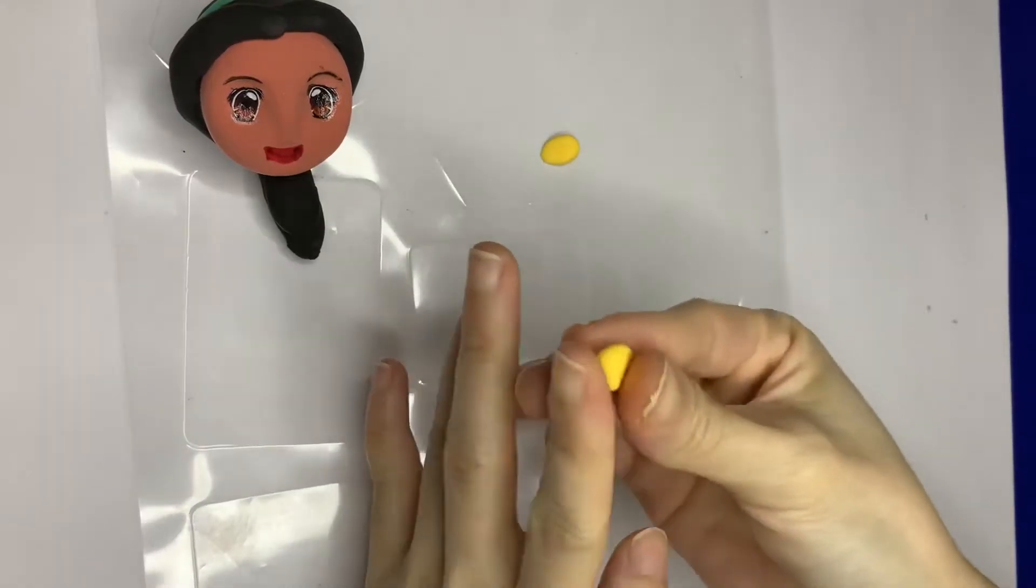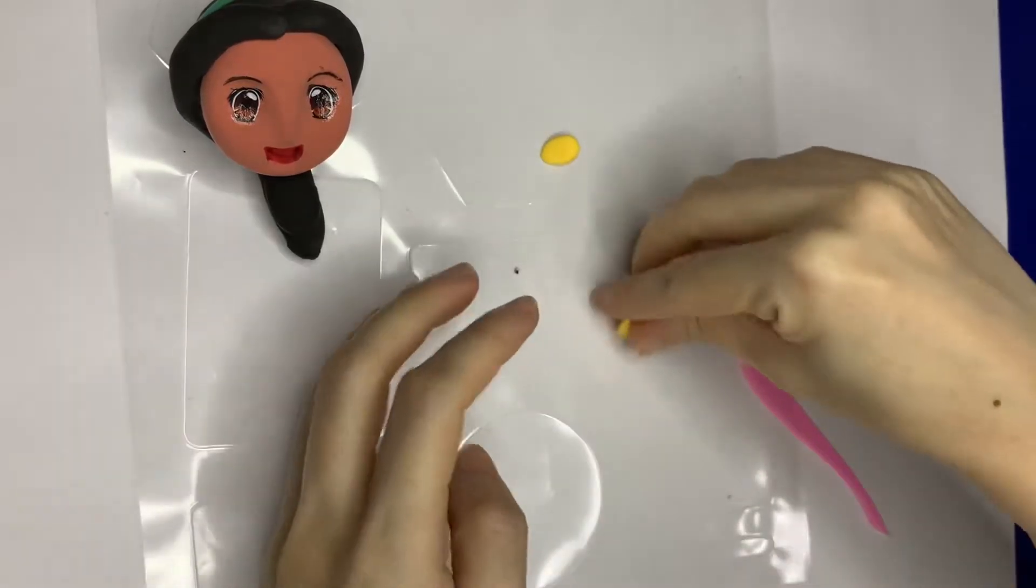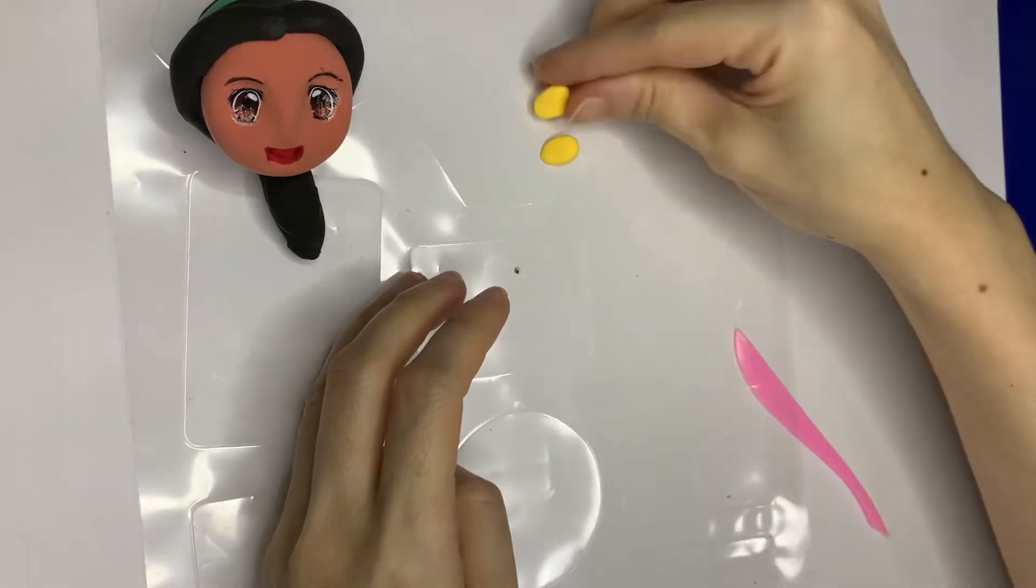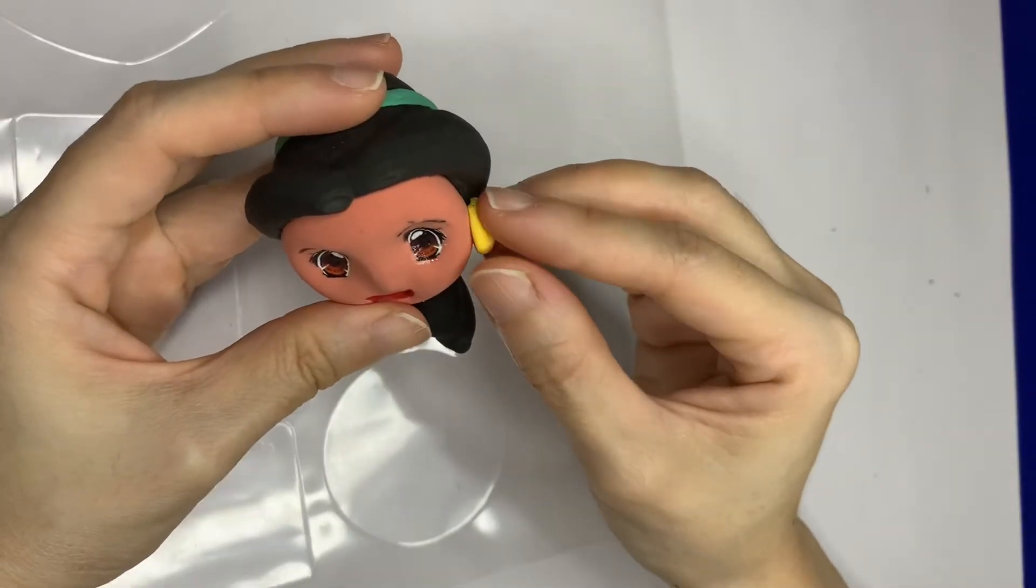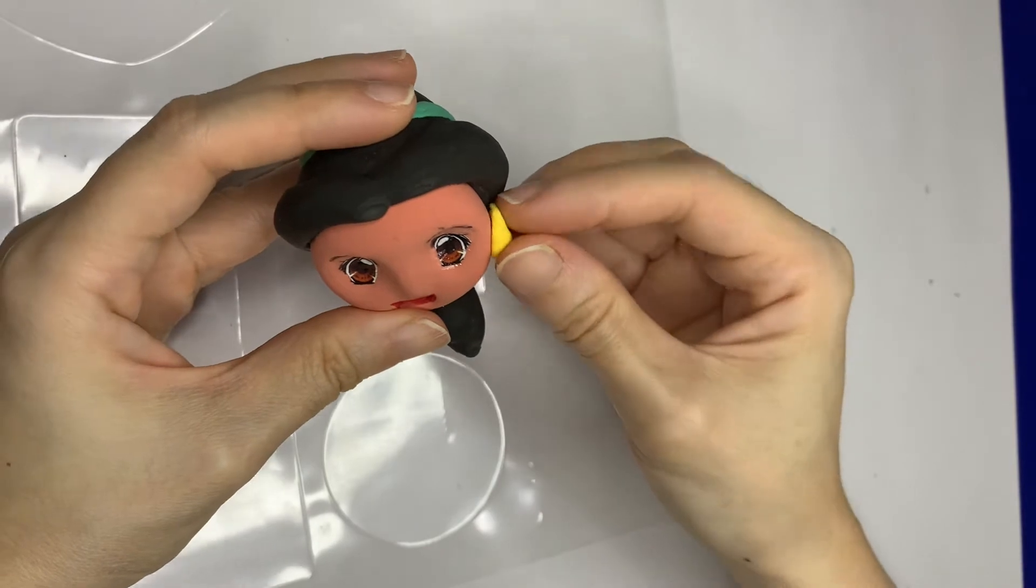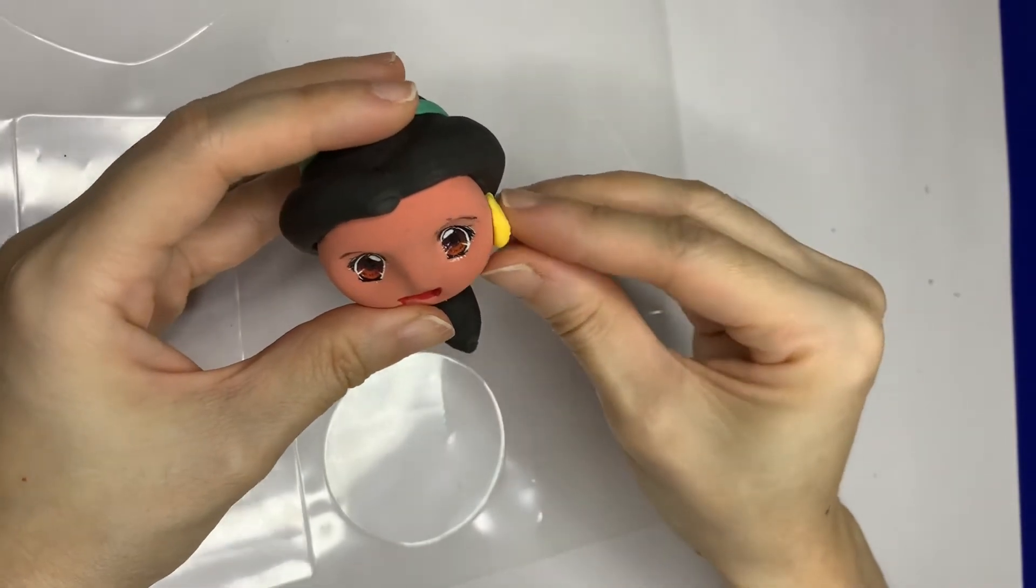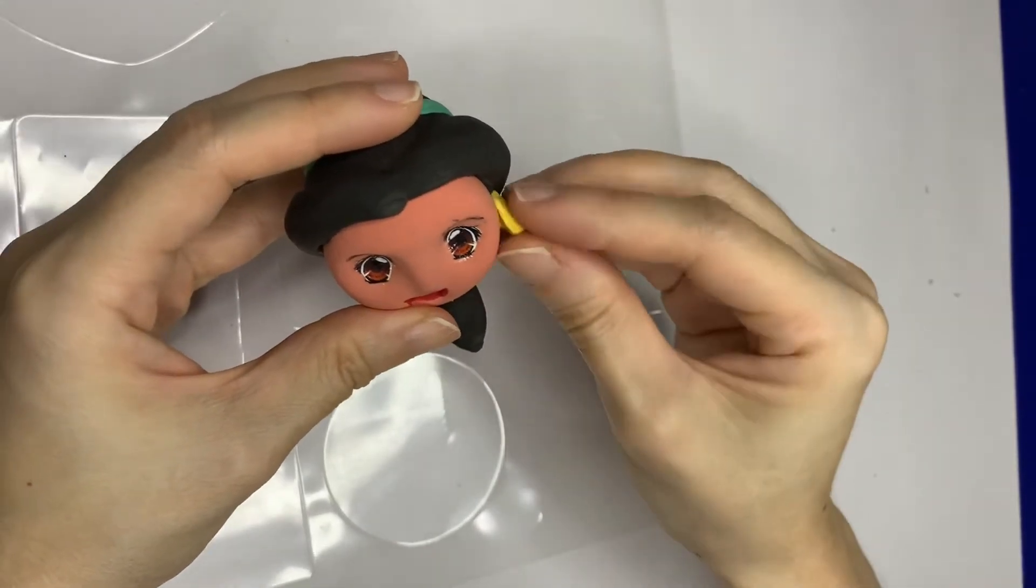Let's make the earrings while we wait for the hair to dry. Make two yellow circles and then flatten one end of the circle. Wait until the earrings are fully dried up, then put them each at one side of the face.